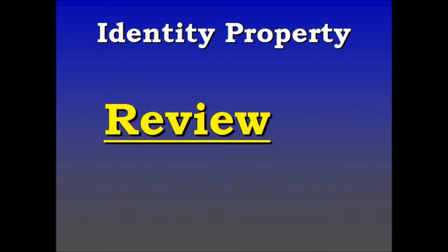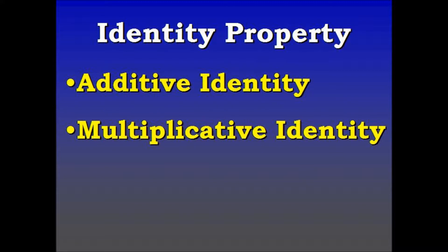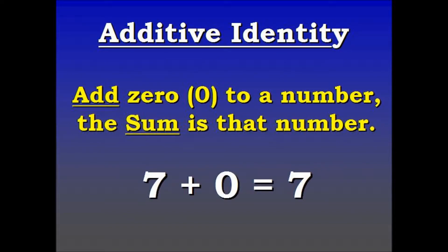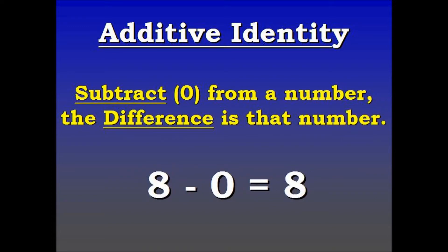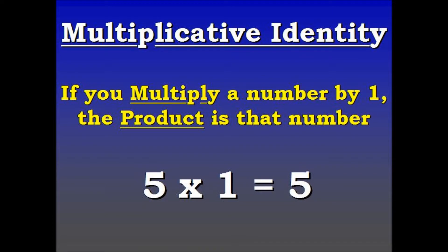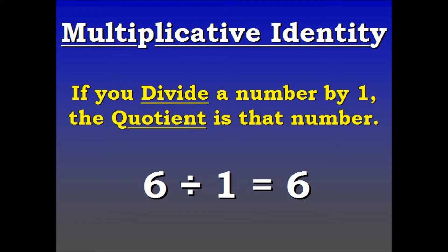Now let's review. The identity property is made up of two parts: the additive and the multiplicative identity property. We understand that adding 0 to a number gives a sum that is that number, and subtracting 0 from a number gives a difference that is that number — that's the additive identity. For the multiplicative identity, if you multiply a number by 1 the product is that number, and if you divide a number by 1 the quotient is that number.